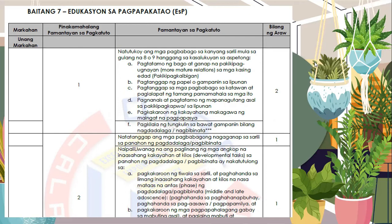With respect to the pamantayan sa pagkatuto or learning competencies, these are commonly found in the modules distributed to students. It is up to us how many days we will allocate to a particular learning competency, provided that we conform to the number of days prescribed by the Department of Education. For example, in the ESP department, 25 days is the prescribed number of days we need to teach the subject matter per grading period. So with 4 quarters at 25 days each, that gives us 100 days per school year. This is the prescribed allocation, and it varies depending on the subject matter.